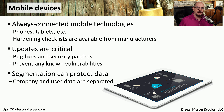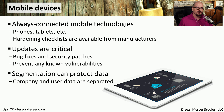Another common hardening technique is to segment the data that is stored on these mobile devices. If you're working for a company, there's usually a segment set aside just for company data, and another segmentation set aside for your user data. This provides a logical separation between your personal information and information that might be proprietary to your company. And if an attacker does find a way to gain access to one of those segments, they would not necessarily have access to any other data on that device.